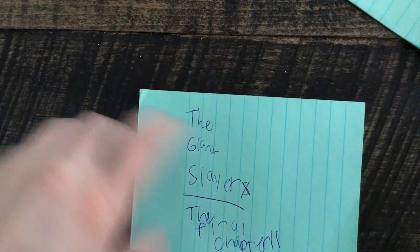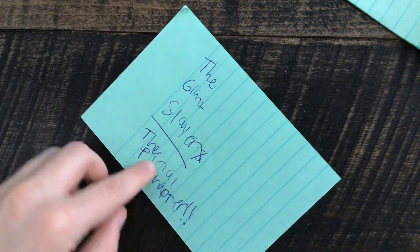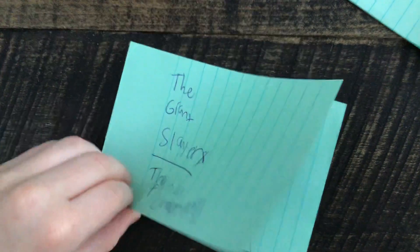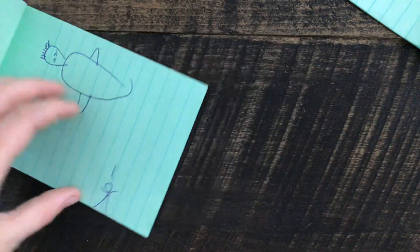And then the giant slayers, the final chapter. It's supposed to say slayers, but since that one died in the fourth one, it's just slayer. So, now there's this big flying thing. The flying thing says, hey, hey, hey.